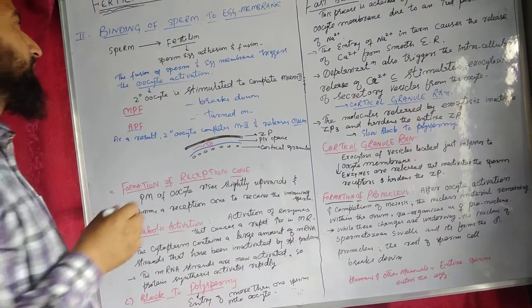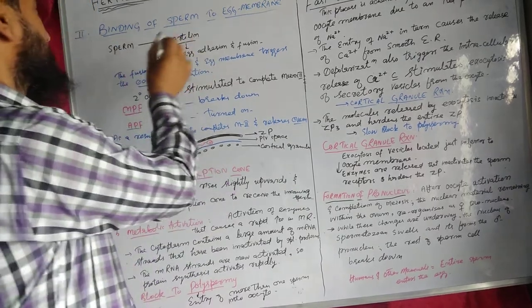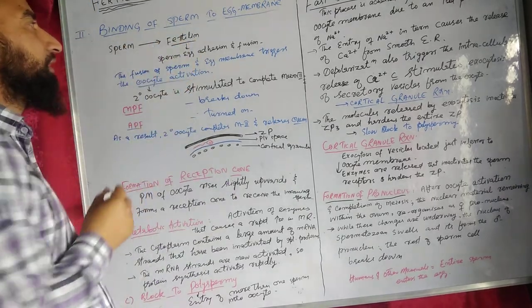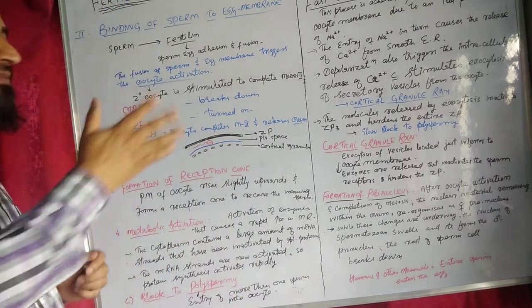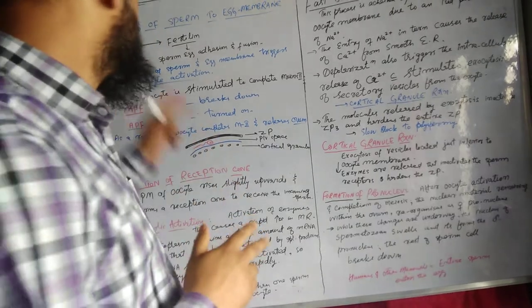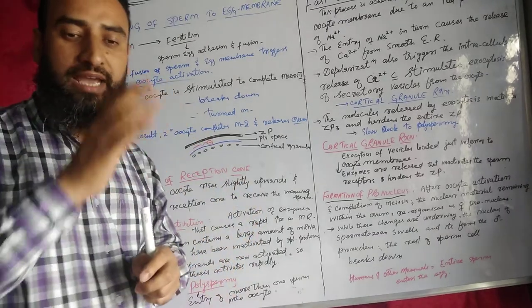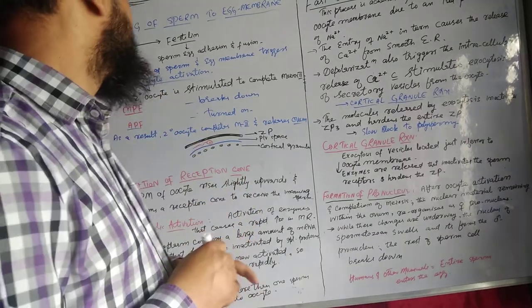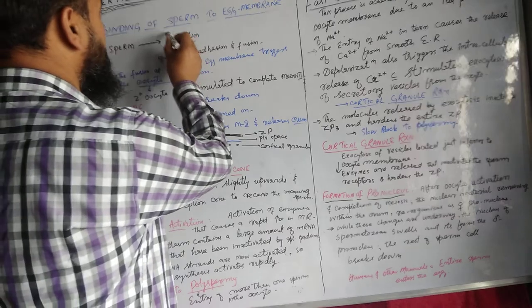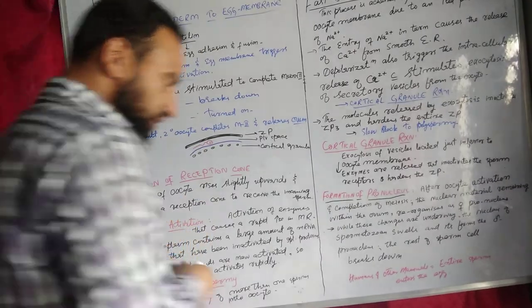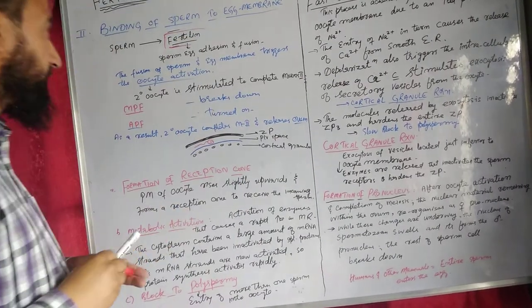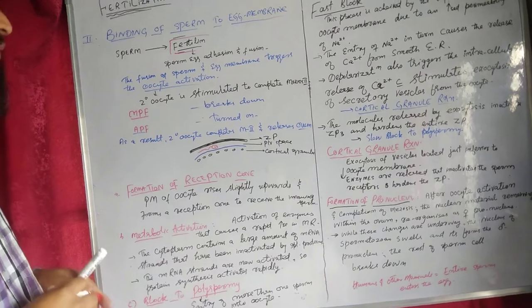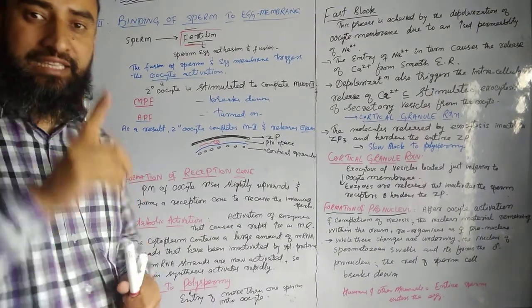In this lecture, we will discuss the binding of sperm to egg membrane. In this process, the sperm actually produces and secretes a proteinaceous molecule. The name of that proteinaceous molecule is fertilin. Please remember it — fertilin.